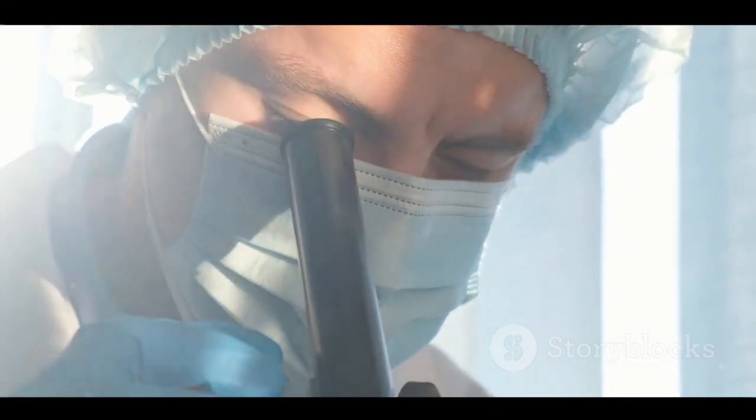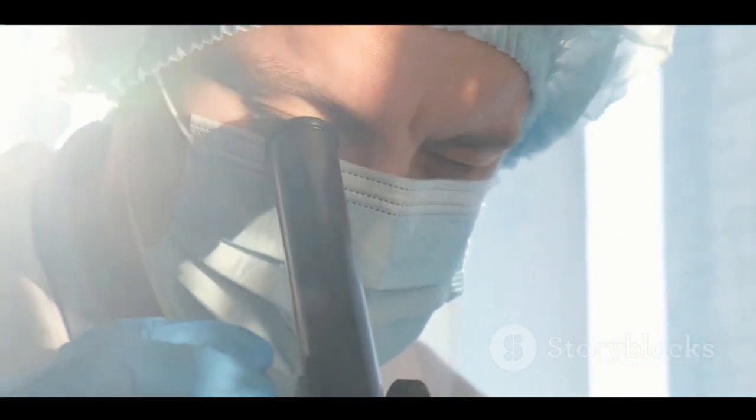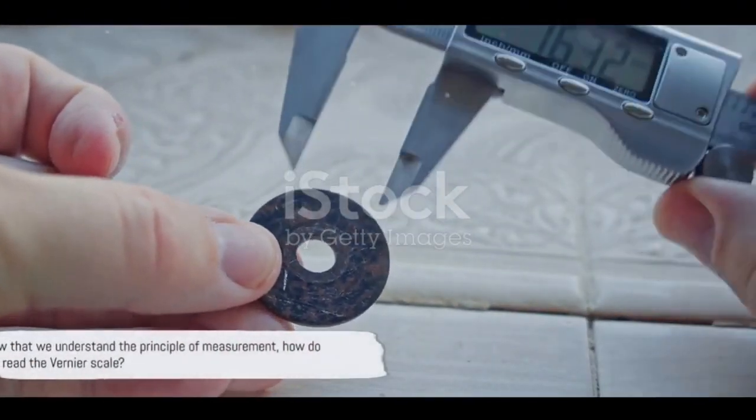This degree of accuracy is crucial in many fields, from manufacturing to science and even jewellery making. So, a vernier caliper allows us to measure objects with an accuracy that would be impossible by eye alone. And that is the principle of measurement.